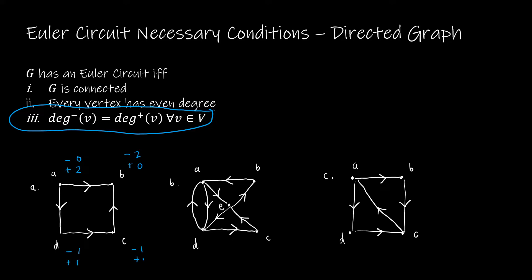For D and C, they both have an in and out degree of one, so those are fine. But when we get to B, because there's no out-degree, we get stuck there. Starting at A, I can travel to B following the directed edge, travel from D to C, travel from C to B — but now I'm stuck there with no way to go anywhere else. So this graph doesn't have an Euler circuit or an Euler path.